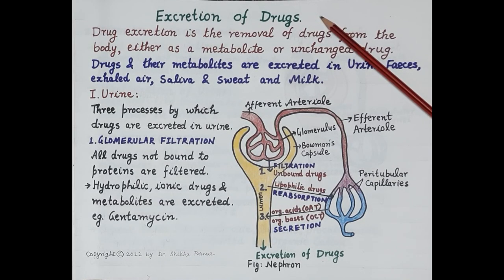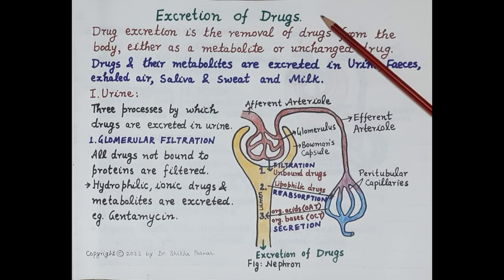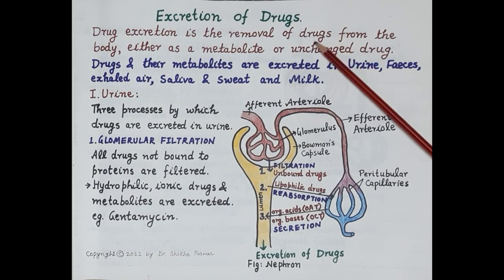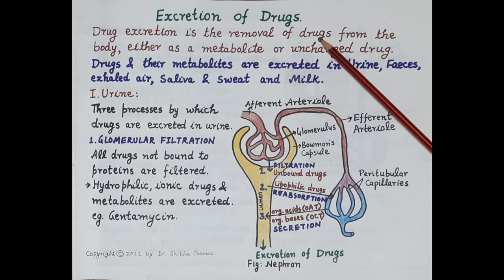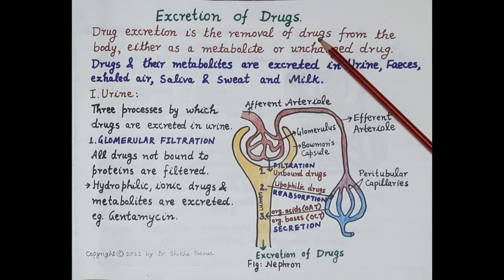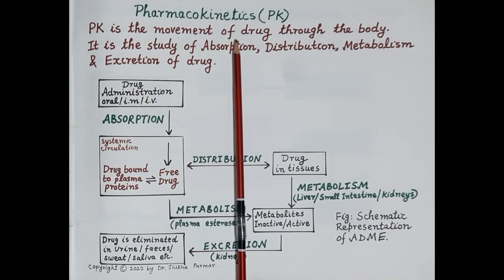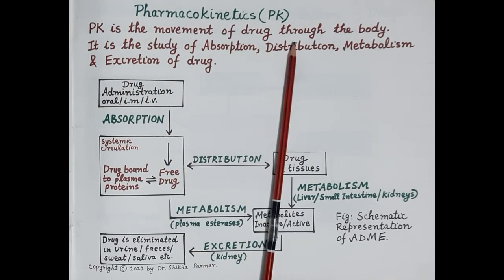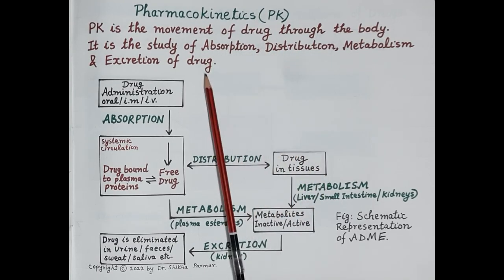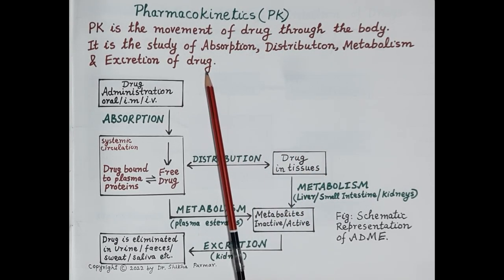Hello students. In today's video we are going to study the concept of excretion of drugs. This is the 12th in the series of videos on pharmacokinetics. Drug excretion is the removal of drugs from the body. Before continuing, let's quickly go through the concept of pharmacokinetics. Once a drug is administered, it goes inside the body. Pharmacokinetics deals with the movement of drug through the body — it is a study of absorption, distribution, metabolism, and excretion of drugs.